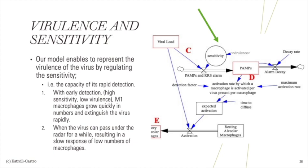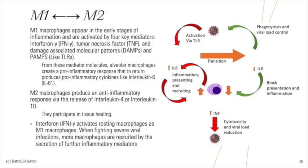First, with early detection — high sensitivity, low virulence — M1 macrophages grow quickly in numbers and extinguish the virus rapidly. Second, the virus can pass under the radar for a while, resulting in a slow response of low numbers of macrophages. Now we can elaborate the M1 to M2 dynamics further.